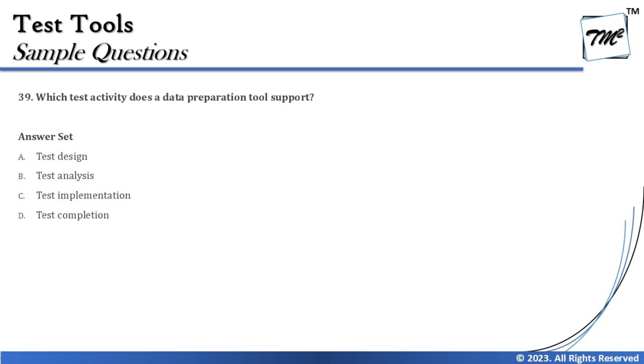Looking at the options: A is test design, B is test analysis, C is test implementation, D is test completion. The options are tricky because many people confuse what happens in test design versus test analysis. In test design we identify the data; in implementation we prepare it. Similarly, in test design we identify the test environment, while in test implementation we build it — a key one-word difference between these two phases.